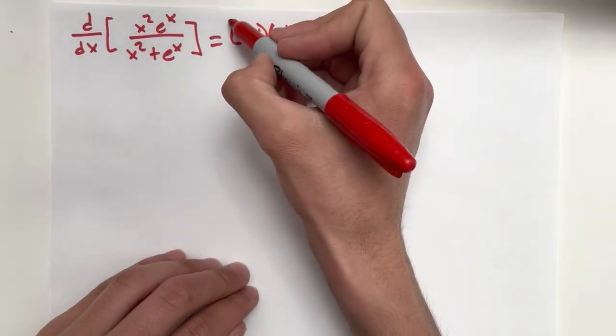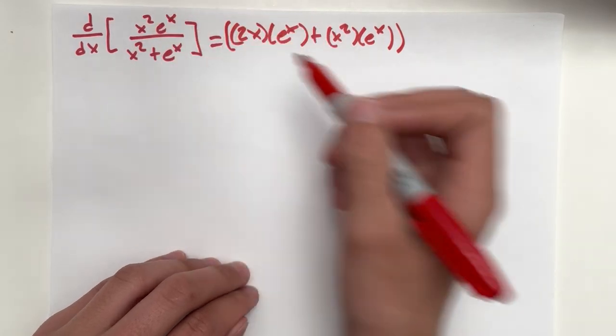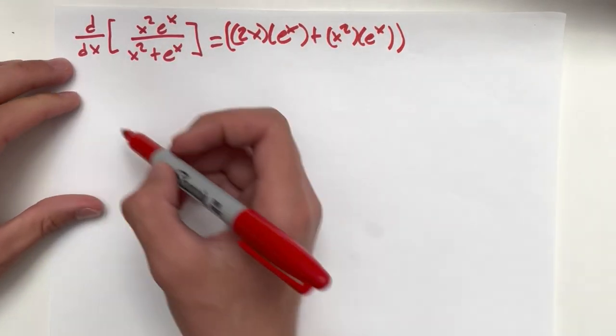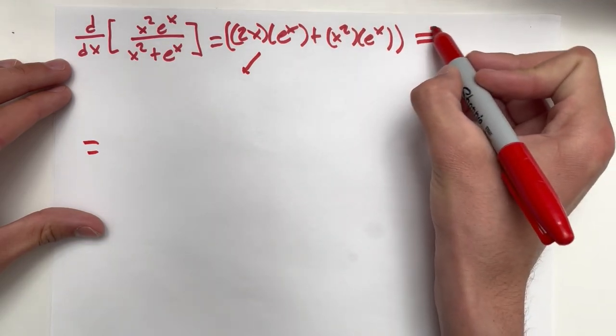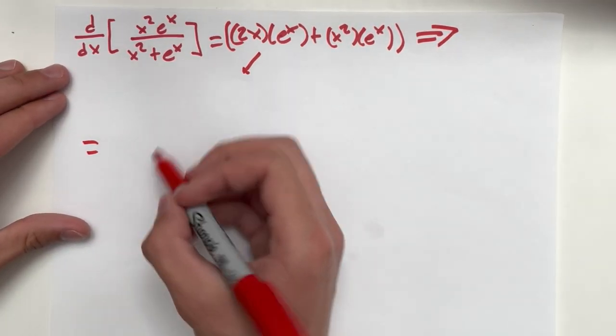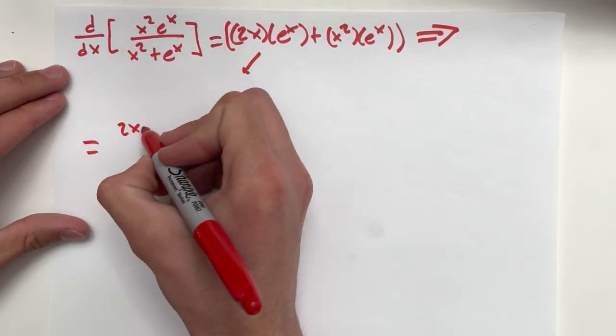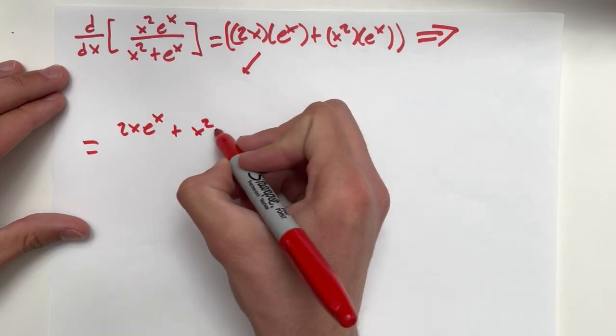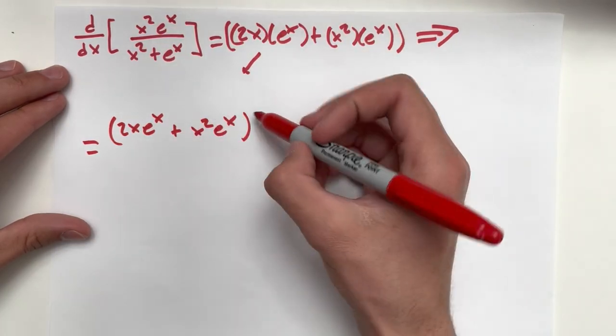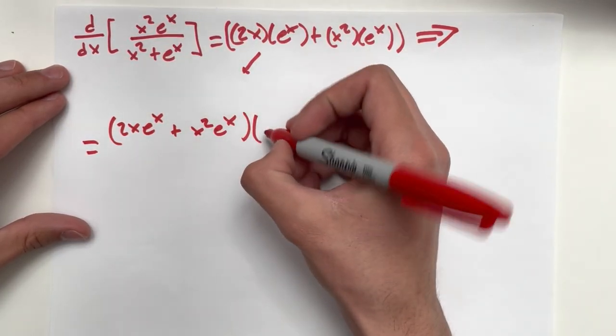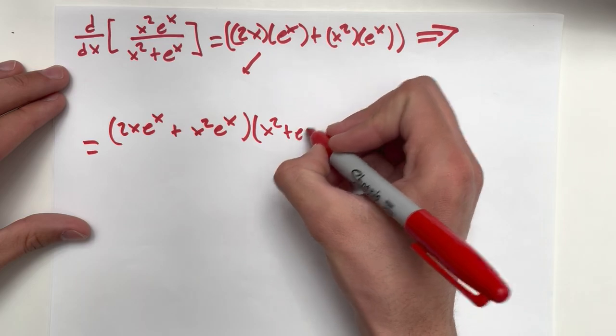And that is the numerator completely differentiated here. I need to write this down. I just didn't give myself enough space. So that's going to keep going. So we have 2x e to the x plus x squared e to the x. So that's the derivative of the numerator times the denominator. So x squared plus e to the x.